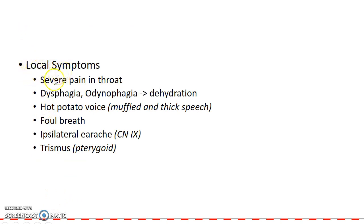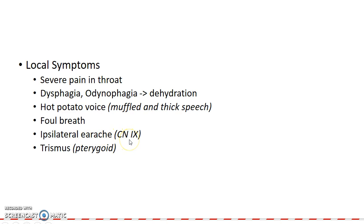The local symptoms include severe pain in the throat, dysphagia (difficulty in swallowing) and odynophagia (painful swallowing). This leads to dehydration because the patient is not able to swallow even fluids. There can be hot potato voice, i.e. muffled and thick speech, foul breath, and ipsilateral earache. The ipsilateral earache is due to referred pain through the 9th cranial nerve. It can also cause trismus, i.e. difficulty in opening the mouth due to involvement of the pterygoid muscle.